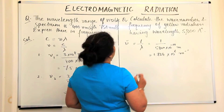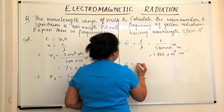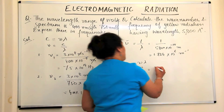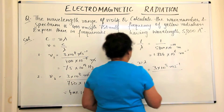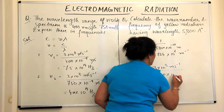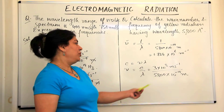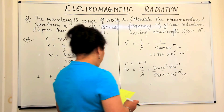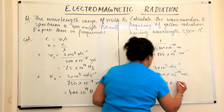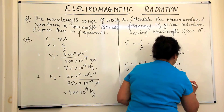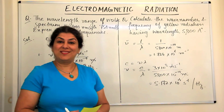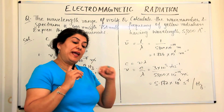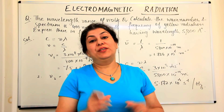Now we calculate the frequency. C = nu × lambda, so nu = C / lambda = (3 × 10⁸ m/s) / (5800 × 10⁻¹⁰ m). Cancel the meters and you get frequency in per second or hertz: nu = 5.172 × 10¹⁴ s⁻¹ (hertz). These simple formulae are used to calculate frequency, wavelength, or wave number of radiation.